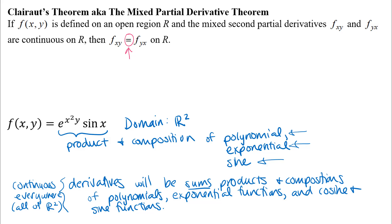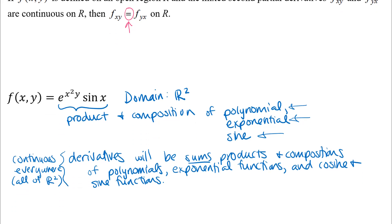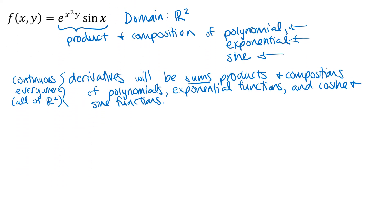The way this theorem is helpful is: if I want to find the mixed second partial derivatives, there's an easier path and a harder path. Since Clairaut's theorem guarantees they're equal for this function, I can choose the easier one. Whether I compute f_xy or f_yx, I know those should be equal.